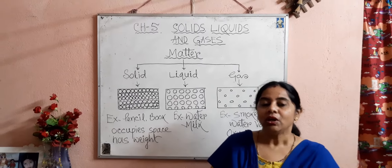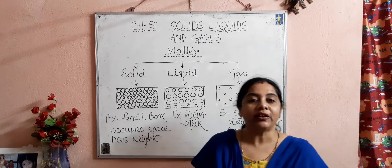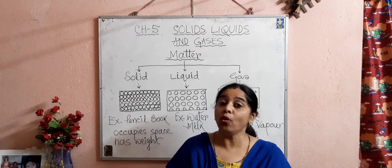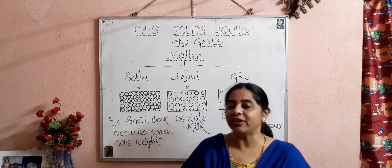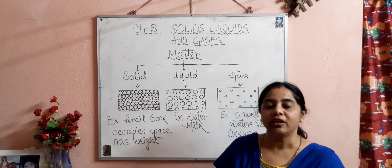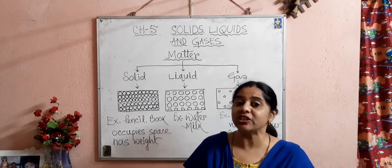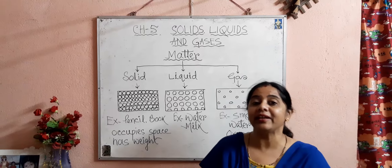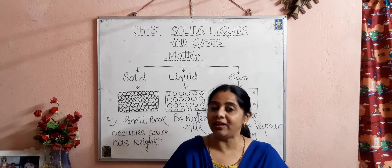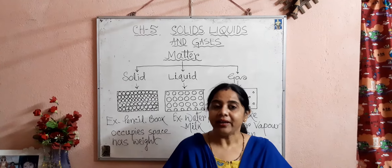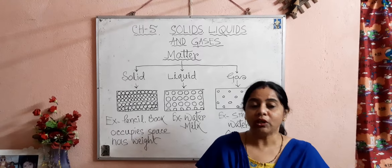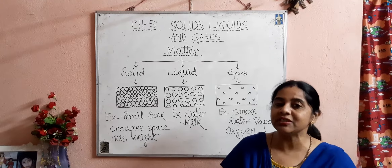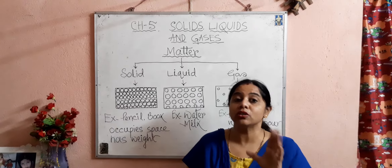Children, you see different kinds of things around yourself. In your home, you see bed, table, chair, cupboard. In the kitchen, you see water, milk, different types of oils like mustard oil and sunflower oil. In school also, you see blackboard, duster, chalk, tables, chairs, water bottles, school bag.